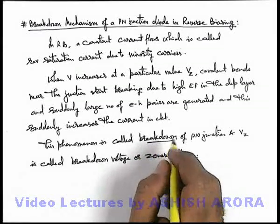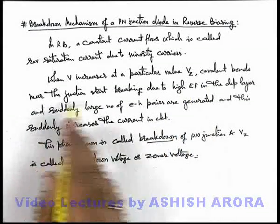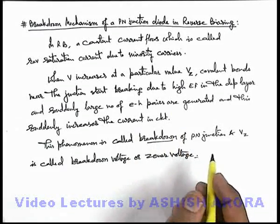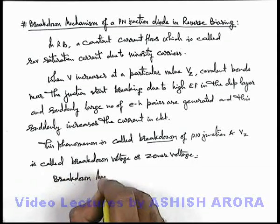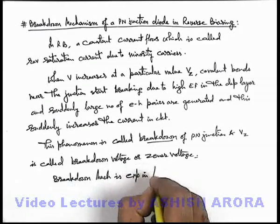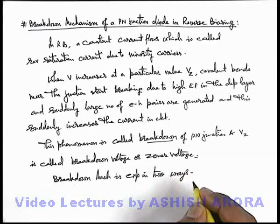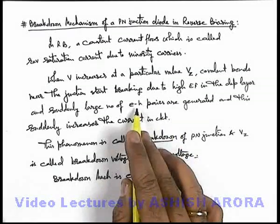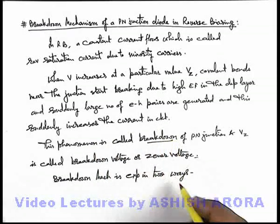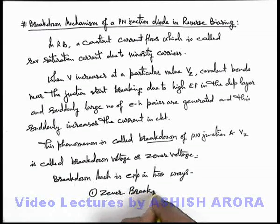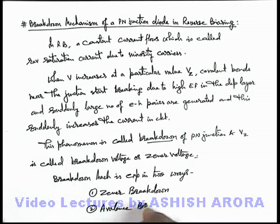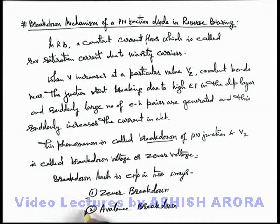When we talk about the phenomenon of breakdown — which is the breaking of covalent bonds near the junction due to a high electric field — this phenomenon can be explained in two ways. The breakdown mechanism is explained in two ways: under which we can explain how suddenly a large number of electron-hole pairs are generated, which increases the current in the circuit. These phenomena are called: the very first one is Zener breakdown, and the second one is avalanche breakdown. In the coming sections, we are going to discuss both of these breakdown phenomena in detail.